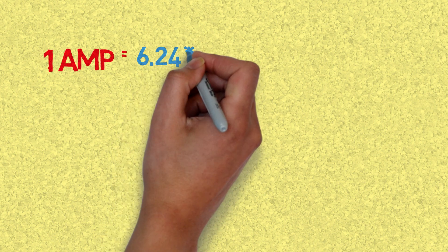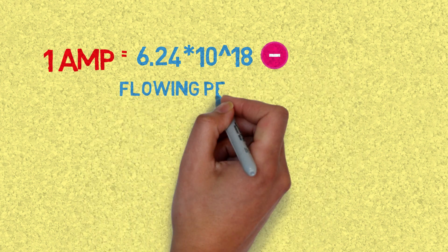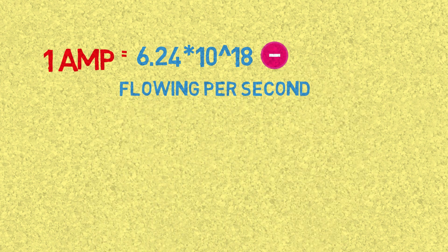Here is the definition. A current of one ampere is 6.24 times 10 to the 18th power electrons going past a given point in one second. So what does this mean?